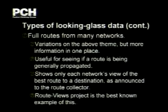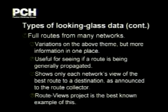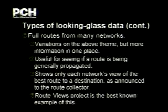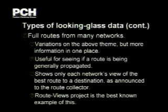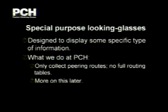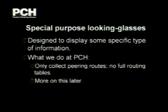If you want to see if a route is being generally visible on the Internet, you can go to RouteViews and see data from a whole bunch of different networks all right there. But the limitation is that generally each network gives only its best route to the destination, so you'll see what's seen as the best route but you won't see all the possible paths. And then there are special purpose looking glasses designed to show some specific type of information — on ours we only collect peering routes and use it to show what peering routes are available where.